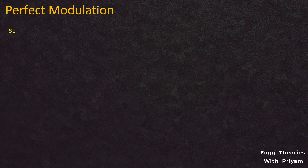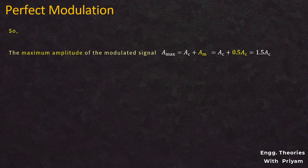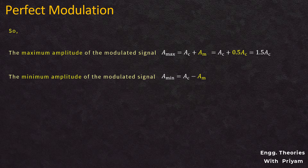So the maximum amplitude of the modulated signal is A_max = ac + am = ac + 0.5·ac = 1.5·ac, and the minimum amplitude is A_min = ac − am = ac − 0.5·ac = 0.5·ac, where ac is the amplitude of the carrier signal.